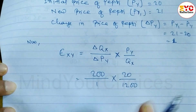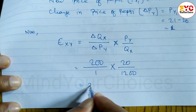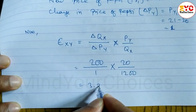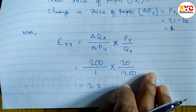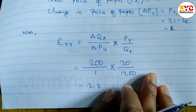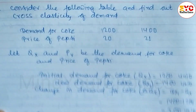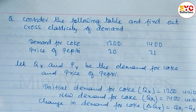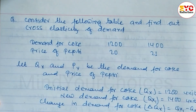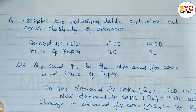When you solve this, the cross elasticity of demand equals 3.3. Hope you understand this question taken from elasticity of demand and supply — this question is repeated maximum times in examinations.